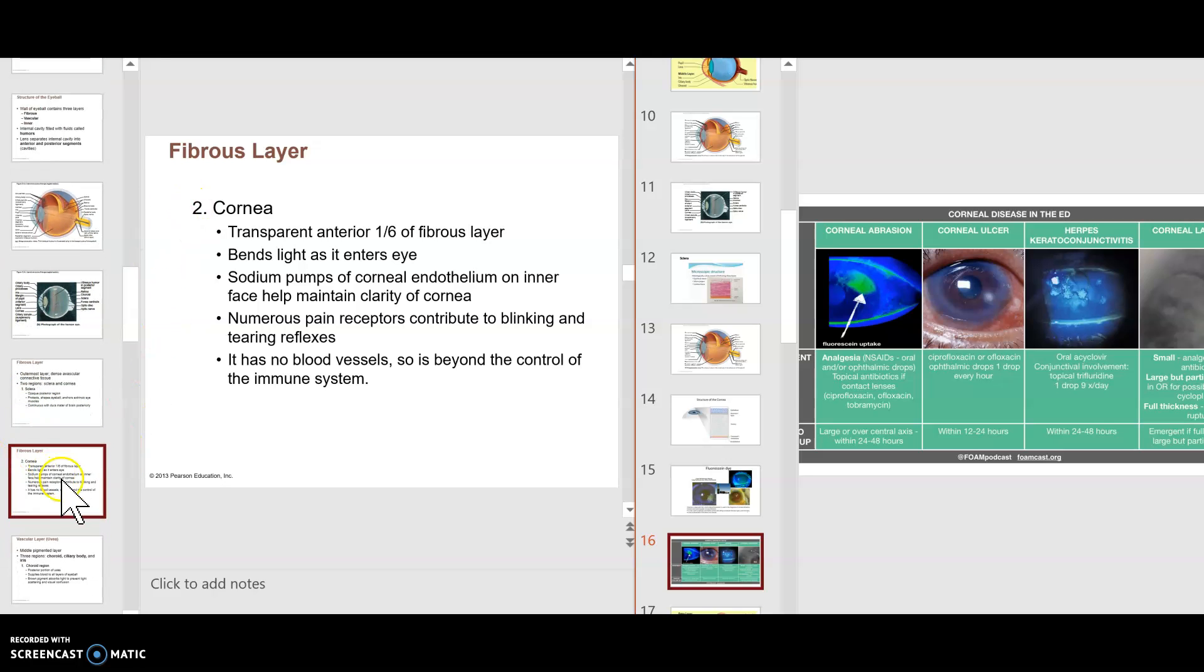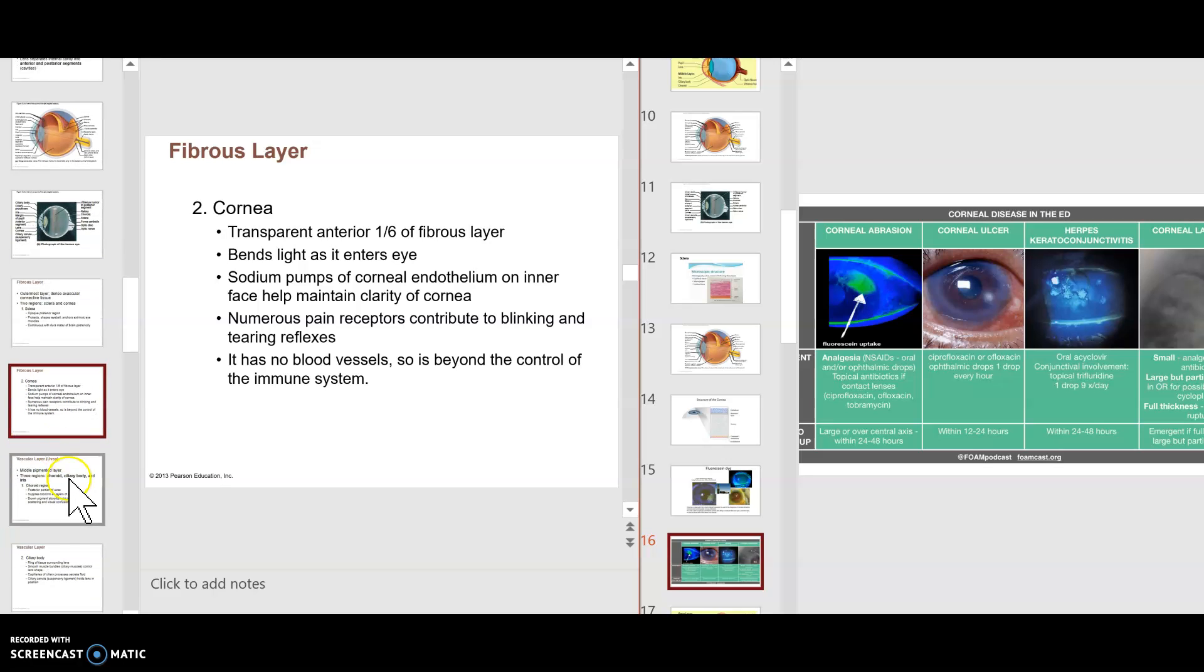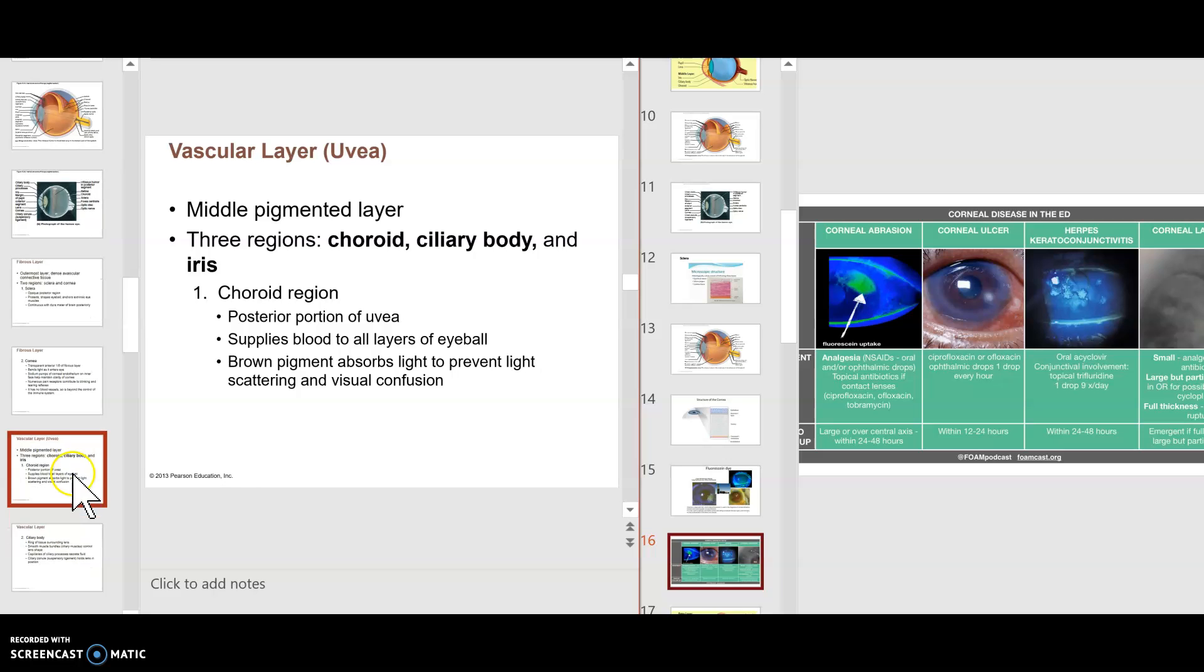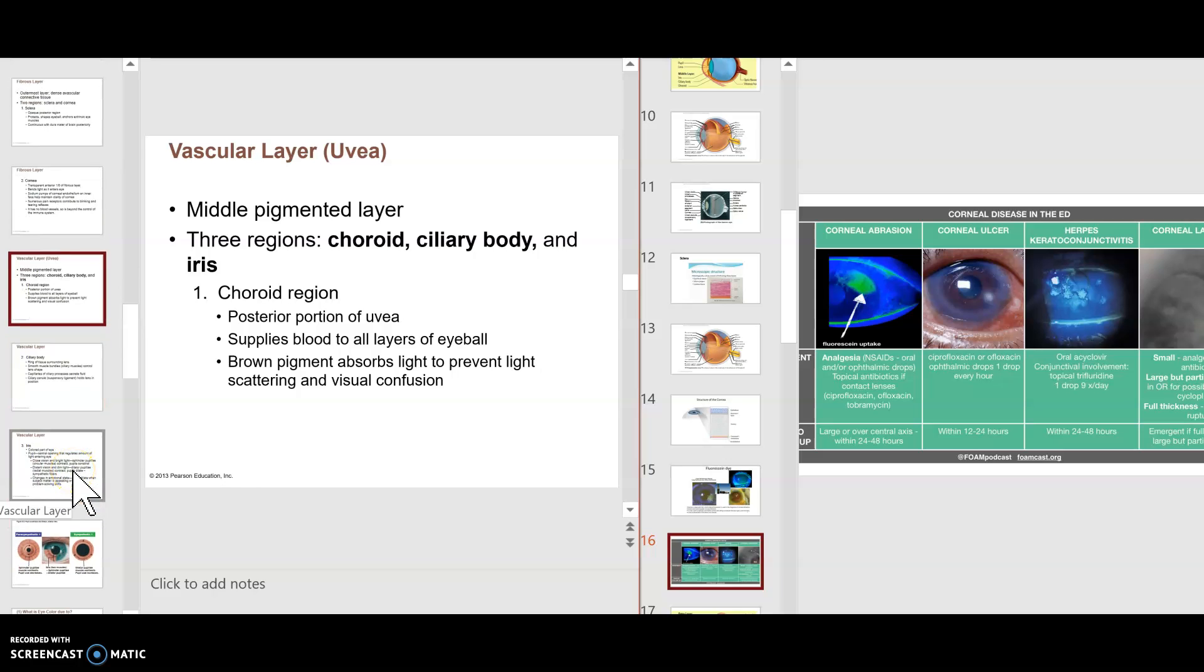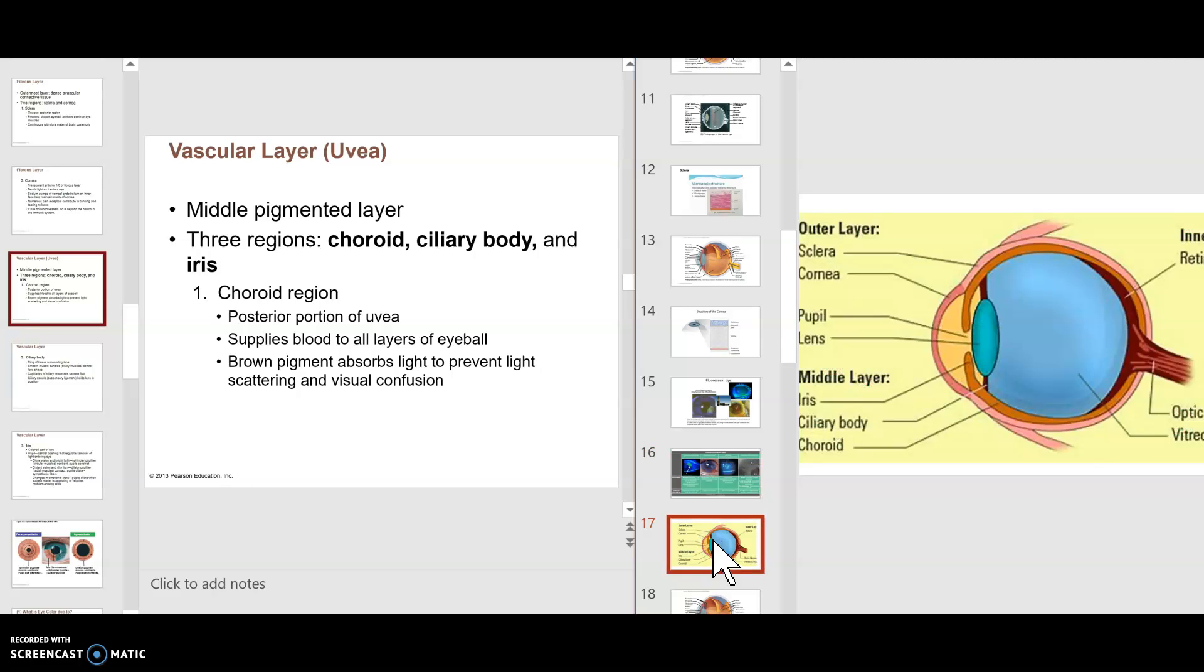So now we go to the next layer here, the vascular layer. The vascular layer, there are three portions of this vascular layer. The vascular layer, which is the middle layer, has three portions to it. It has the choroid, it has the ciliary body, and it has the iris.